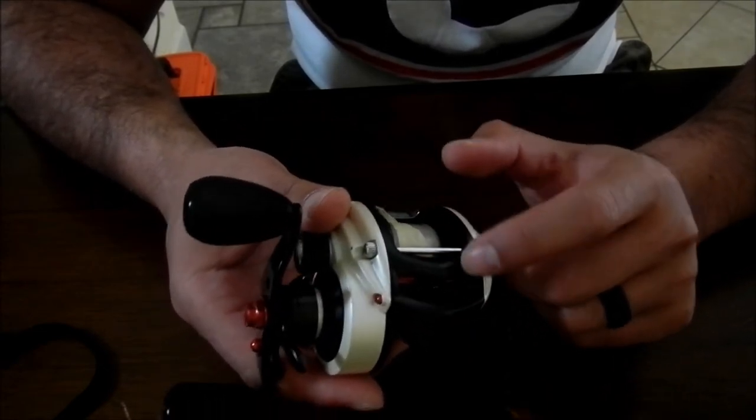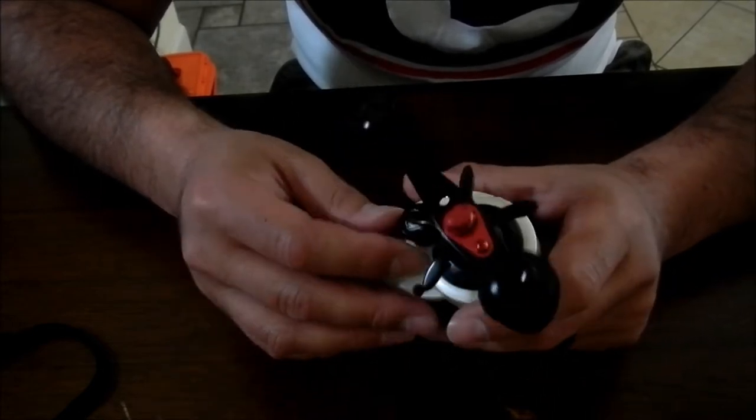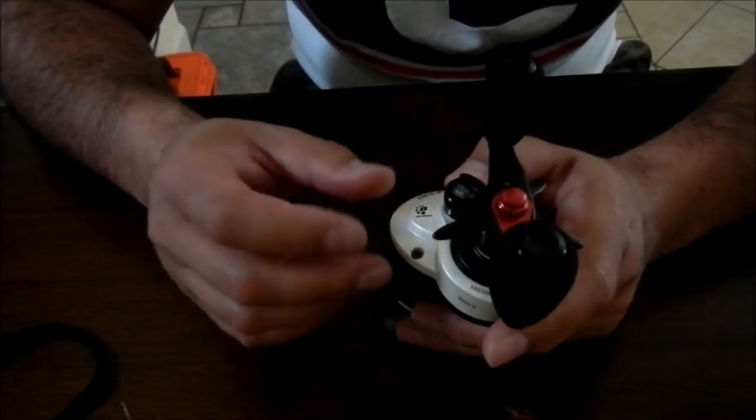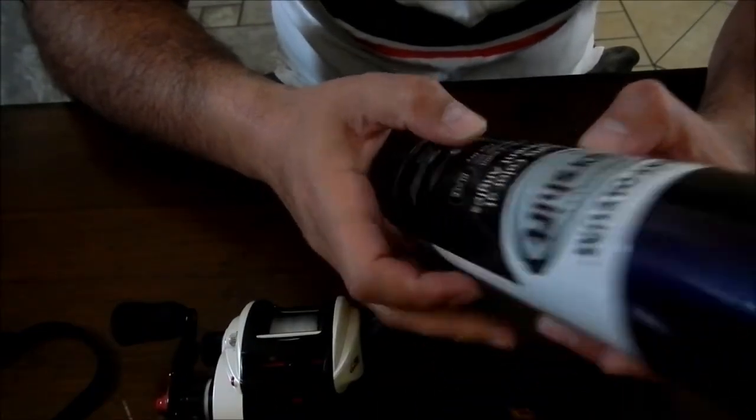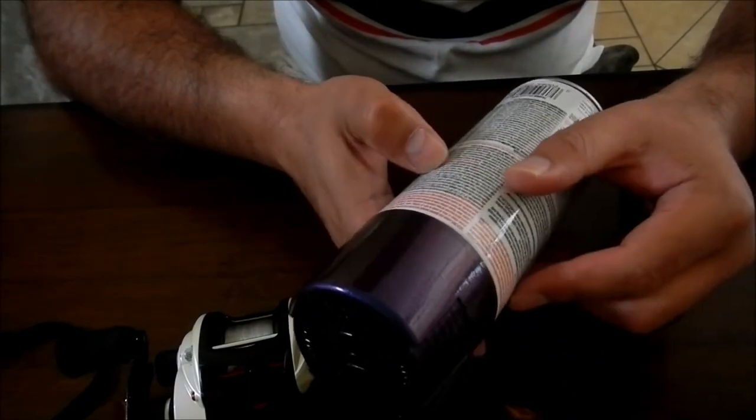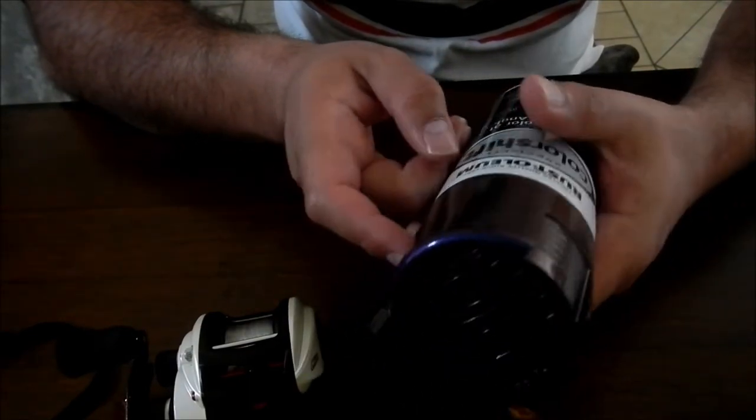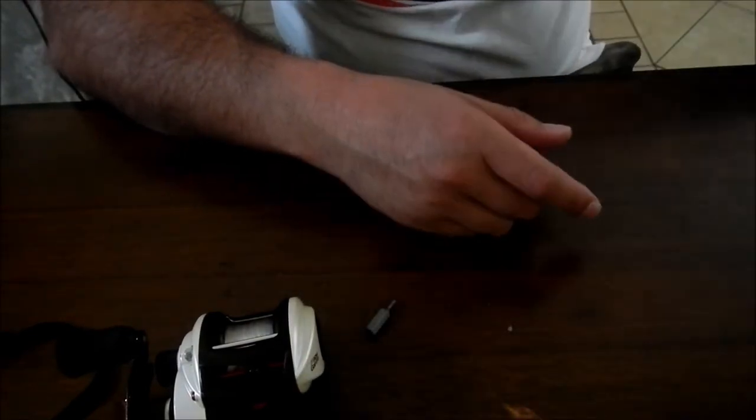This is the color I'm going to paint it - a Rust-Oleum color shift. You can see that it changes different colors in the sunlight. This is the paint I'm going to be using.